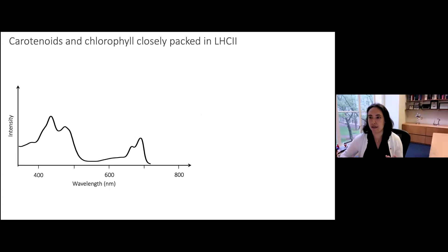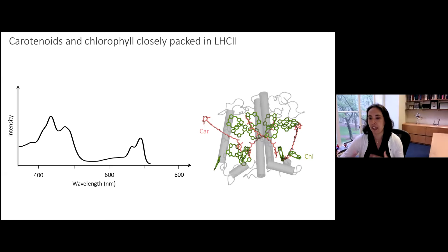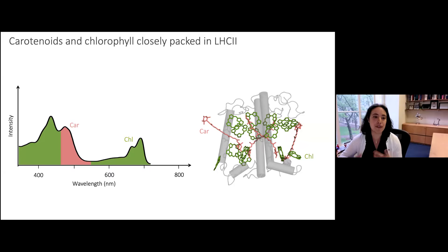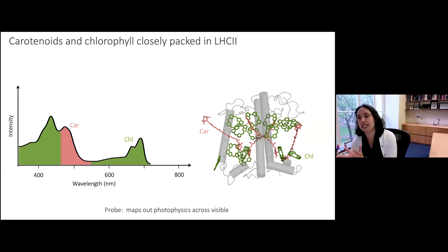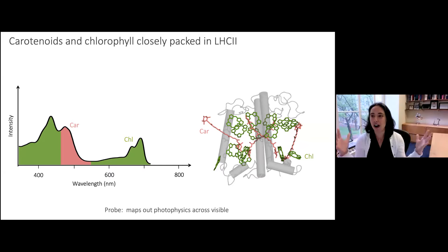To think about these two questions, we can begin by looking at the molecular structure of LHC2. The protein is shown in gray, the chlorophylls in green, and the carotenoids in pink. These pigments are packed densely within the protein scaffold — they all neighbor each other — but if we look at the absorption spectrum, the transitions are spectrally separated. These pigments that neighbor each other in space are separated in the spectral domain, and we want to understand their photophysics and interactions.